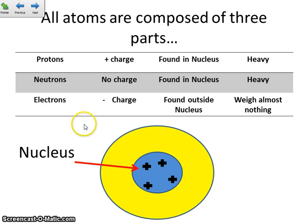The next subatomic particle is a neutron. Neutrons have no charge, so we're going to represent those with a zero. They're also found in the nucleus, along with those protons. And they're just as heavy as those protons are. Both of these are going to contribute to the mass of the atom.